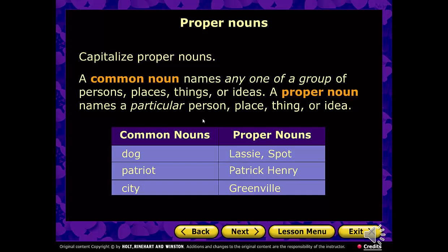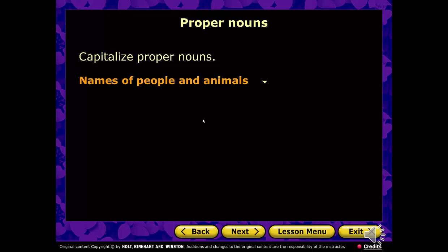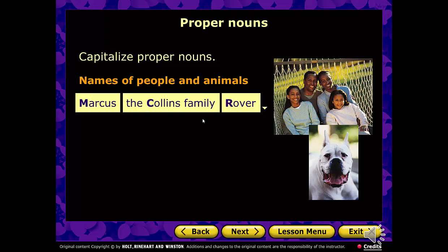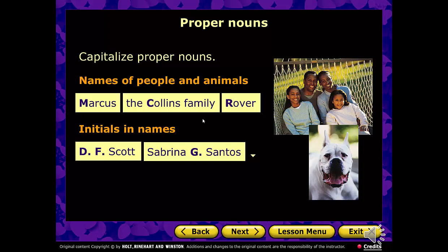Names of people and animals are capitalized: Marcus, the Collins family — capital C — the Workman family, the McCoy family, and Rover, a dog's name. Initials are also capitalized — D.F. Scott, for example. A middle initial is capitalized as well: Lisa M. Workman, M for Marie. Abbreviations before or after names are capitalized too: Dr. Rachel Moss — capital D — and Herbert Wu Jr. or Herbert Wu III after the name.